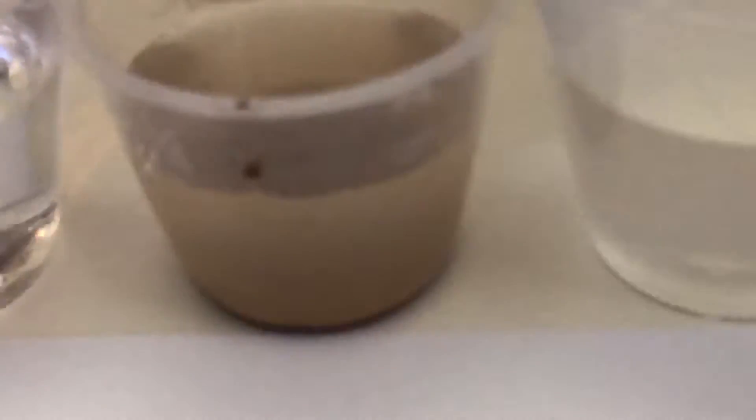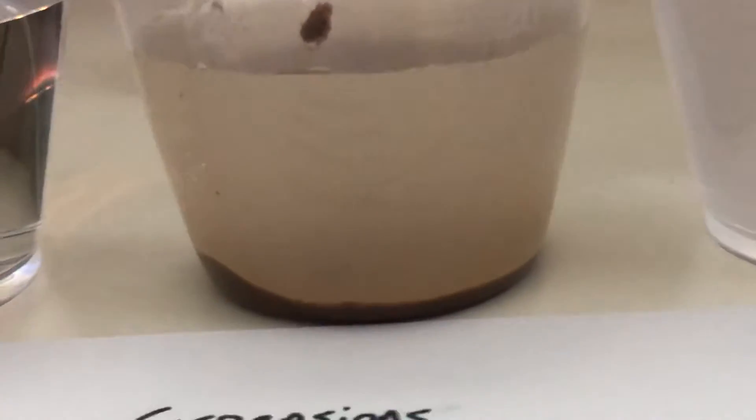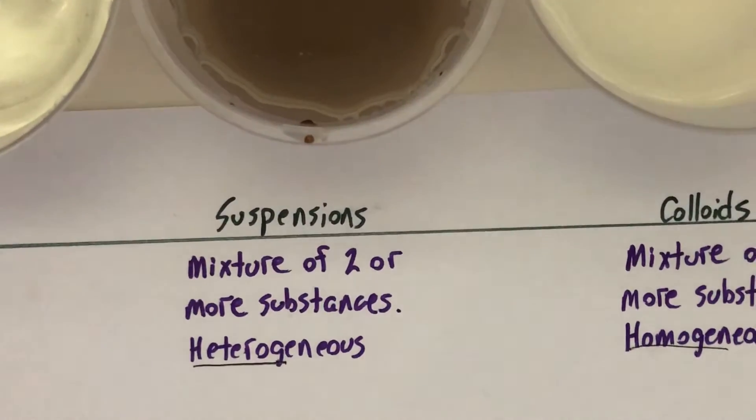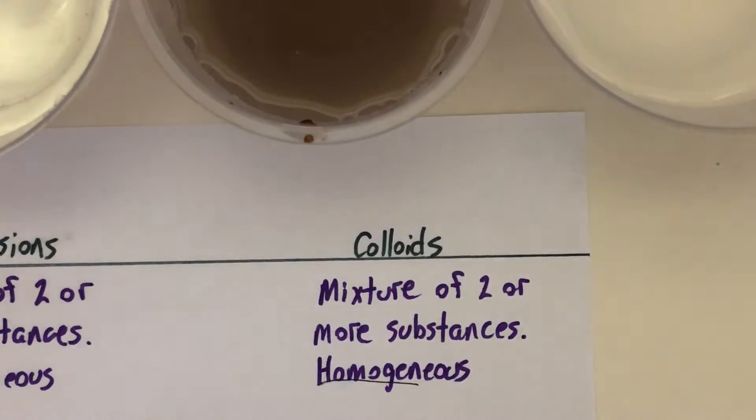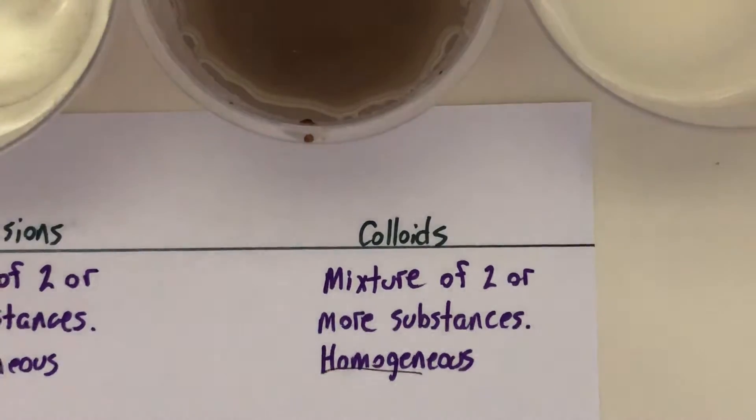Suspensions are heterogeneous because of how they look. That's some muddy water — we can definitely tell there's mud settled at the bottom, and some still in the water. That's heterogeneous because we can tell they look very different. Colloids are homogeneous as well. Here is water with some milk dissolved in it; those particles of milk are staying in solution and not settling to the bottom, so it looks the same top to bottom, but it's kind of cloudy.